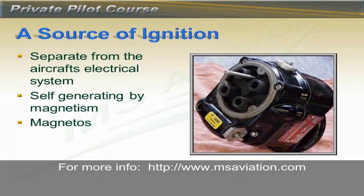The last thing we need to explore to finish off how the engine works is where the spark comes from. In order to ignite the fuel-to-air mixture in the cylinders — provided by the carburetor through the intake manifold — we've got to have a source of ignition. The ignition comes from a device called a magneto. You don't need a battery, alternator, or any other electricity to make a magneto work. Magnetos are found on, believe it or not, lawn mowers. Pulling the cord to start a lawn mower causes the magneto to turn inside, which generates electricity.